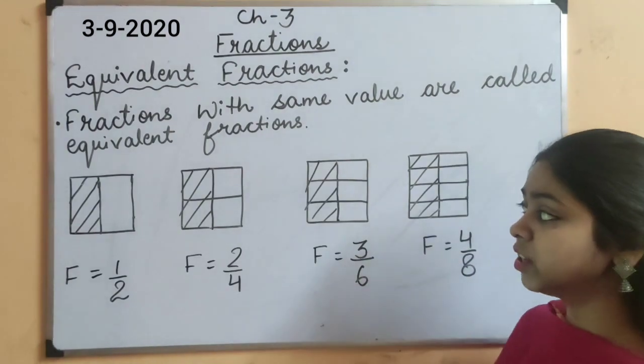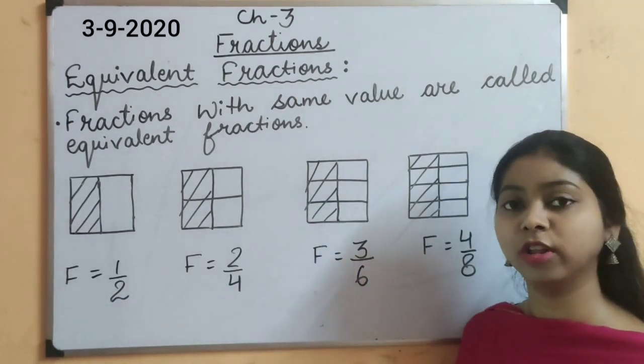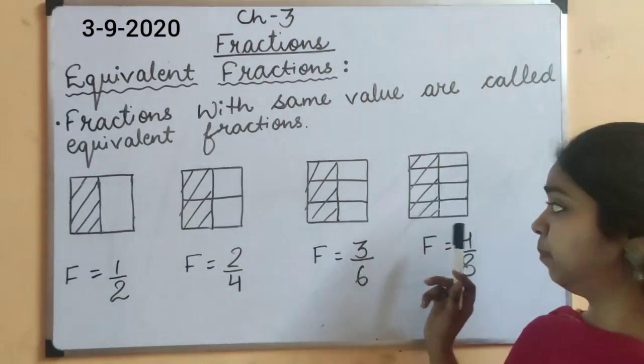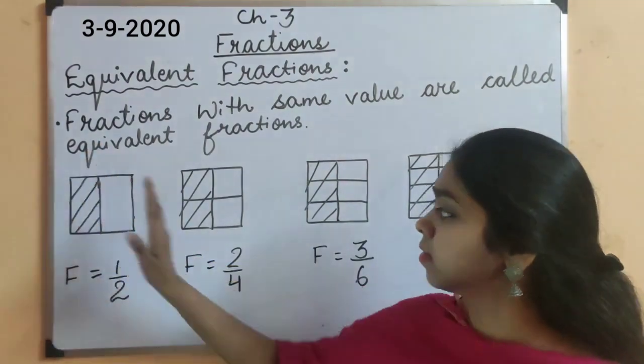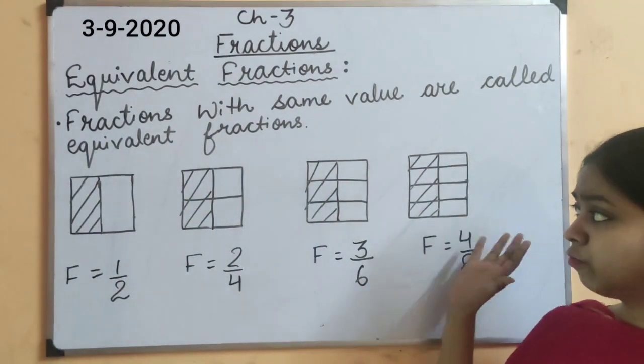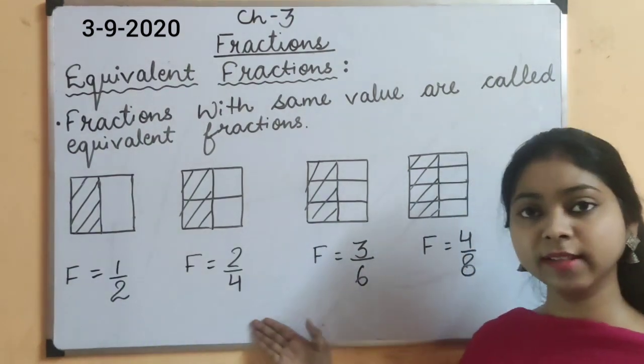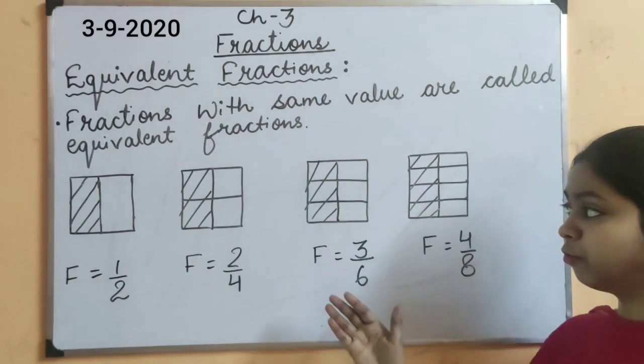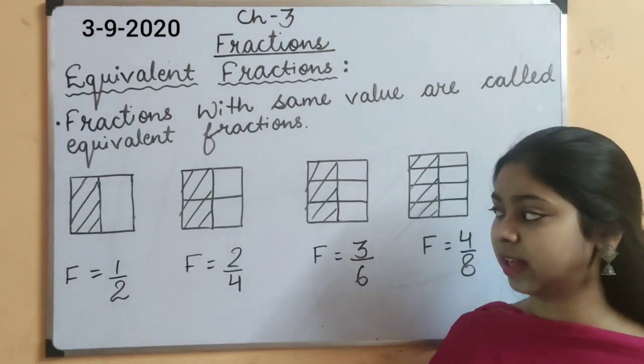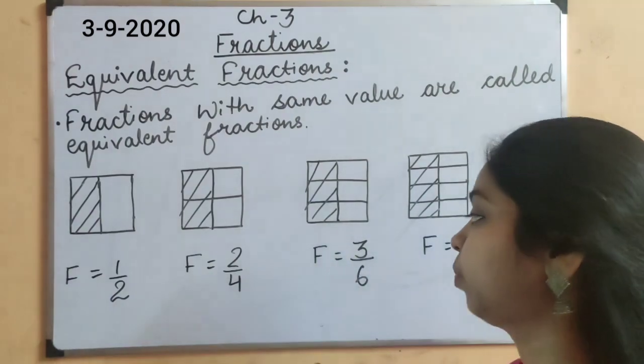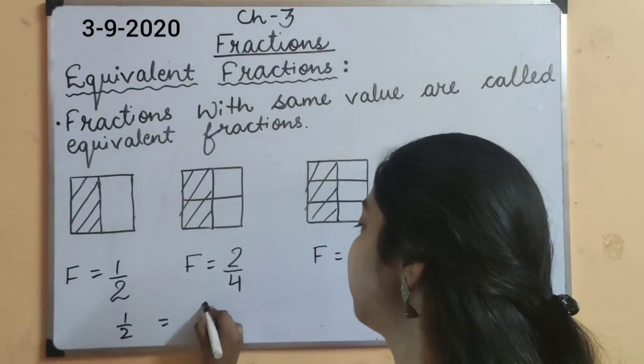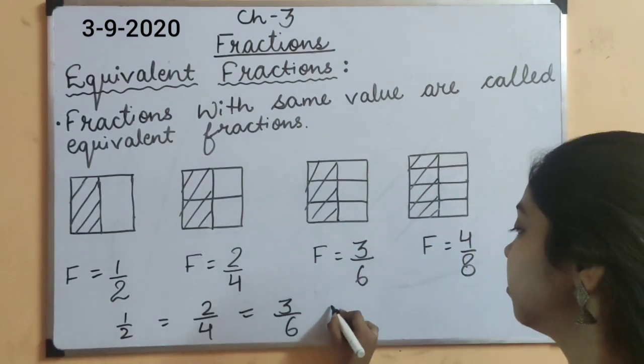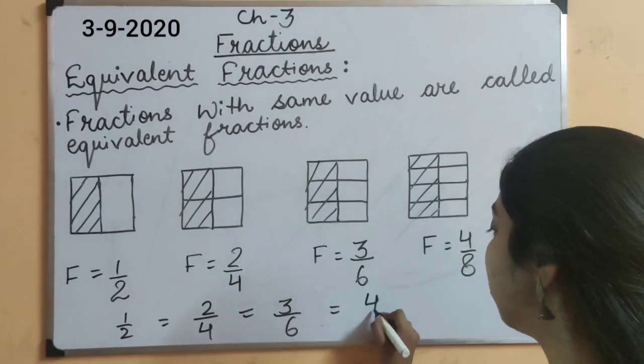As you can see, each child has divided their chocolate into so many parts. But, they have eaten half of the part of the chocolate on their own. What we can observe here is the images show the half part is eaten, half part of the whole chocolate is eaten. But, what we can see? The fraction is represented in different ways.